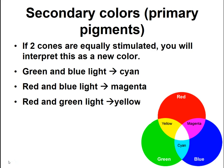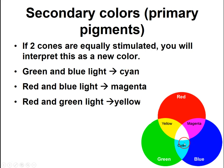So red, green, and blue are the primary colors. The secondary colors are cyan, magenta, and yellow — sometimes called the primary pigments or inks. These are combinations of the primary colors. If you send green and blue light in, your brain sees cyan. If you send red and blue, you see magenta. And if you send red and green, you see yellow.